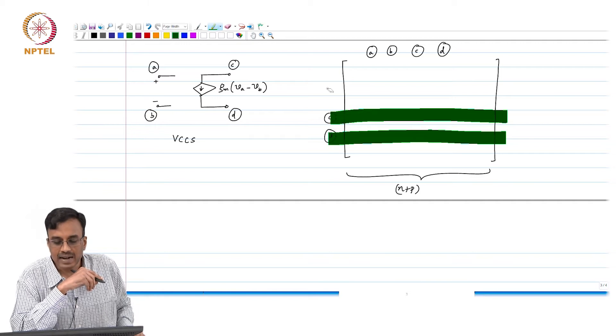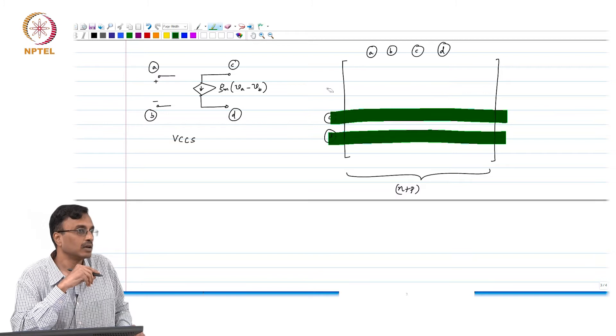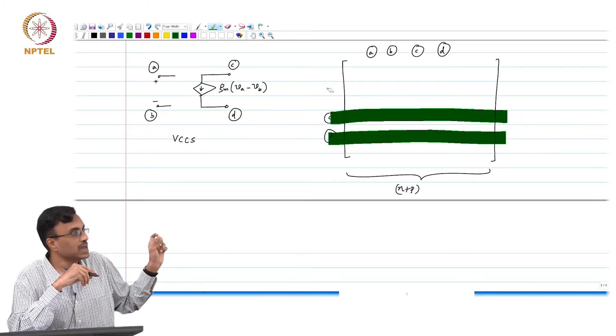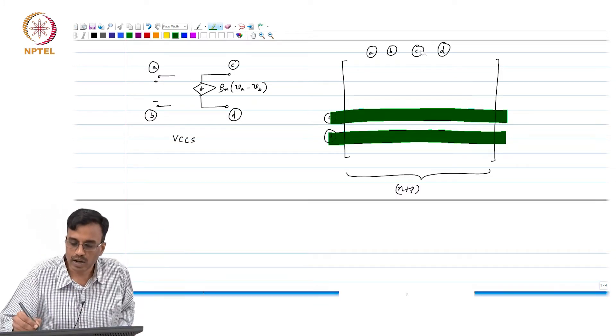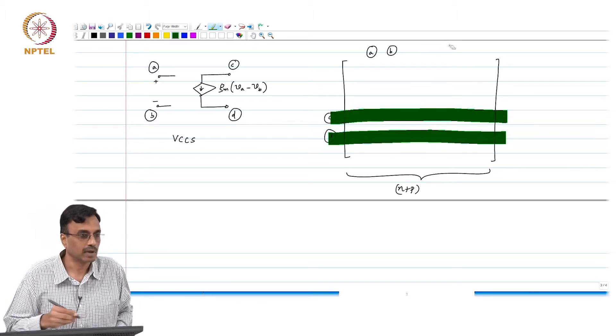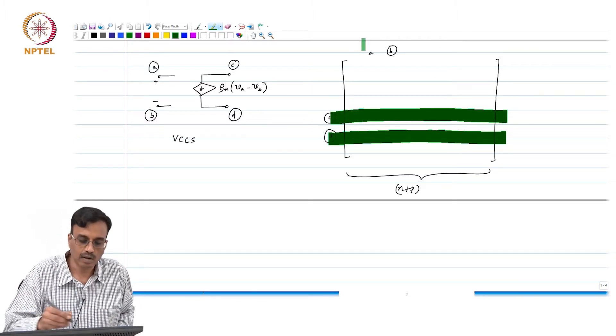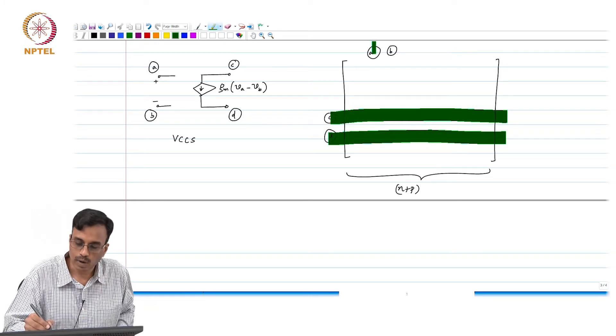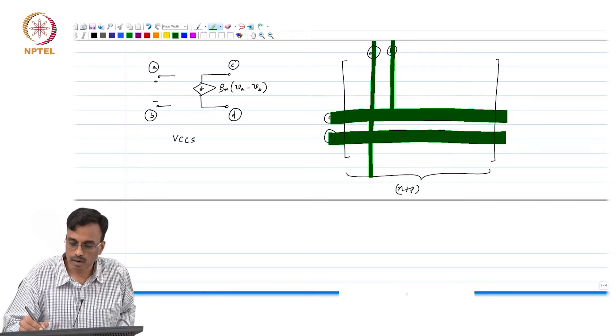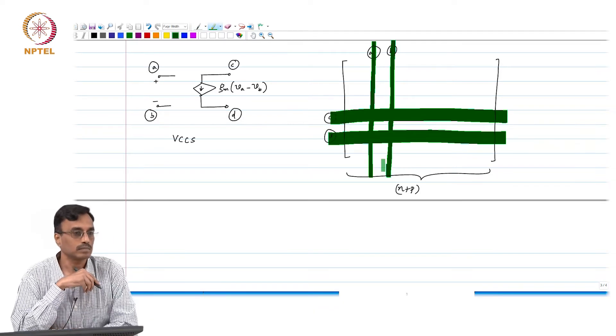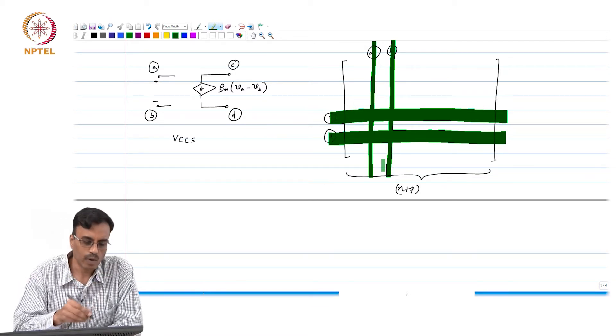The current depends on which voltages? Node voltages A and B. So we do not have to worry about the Cth and Dth columns. The entries will happen here. Does it make sense? And what is the entry?